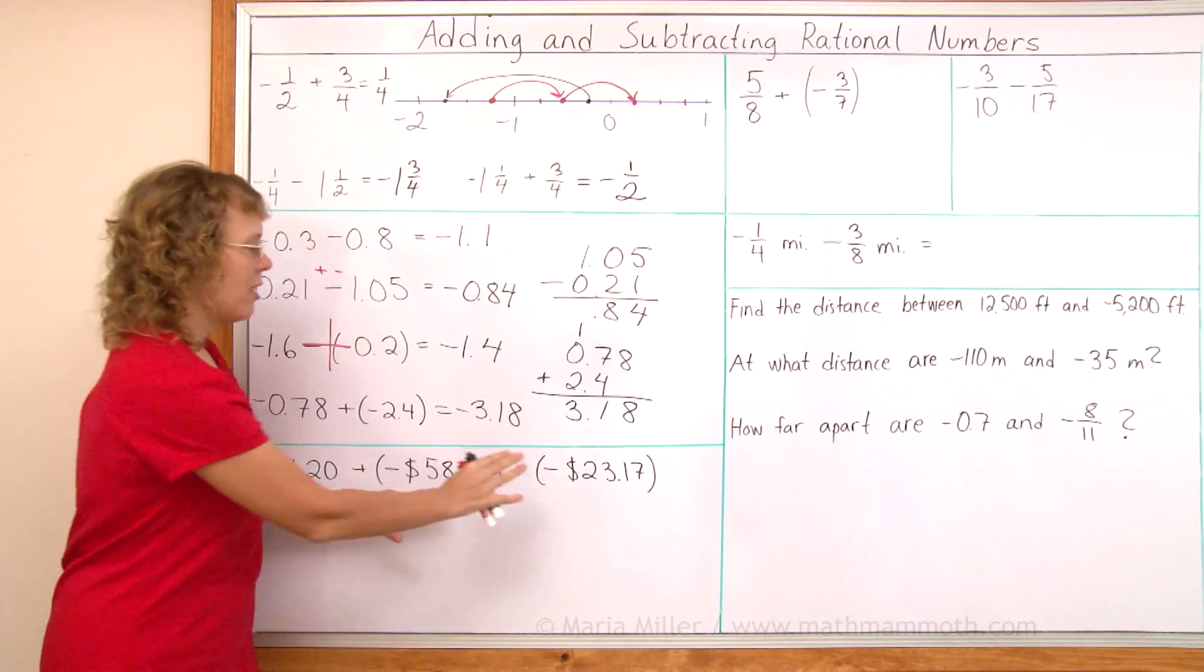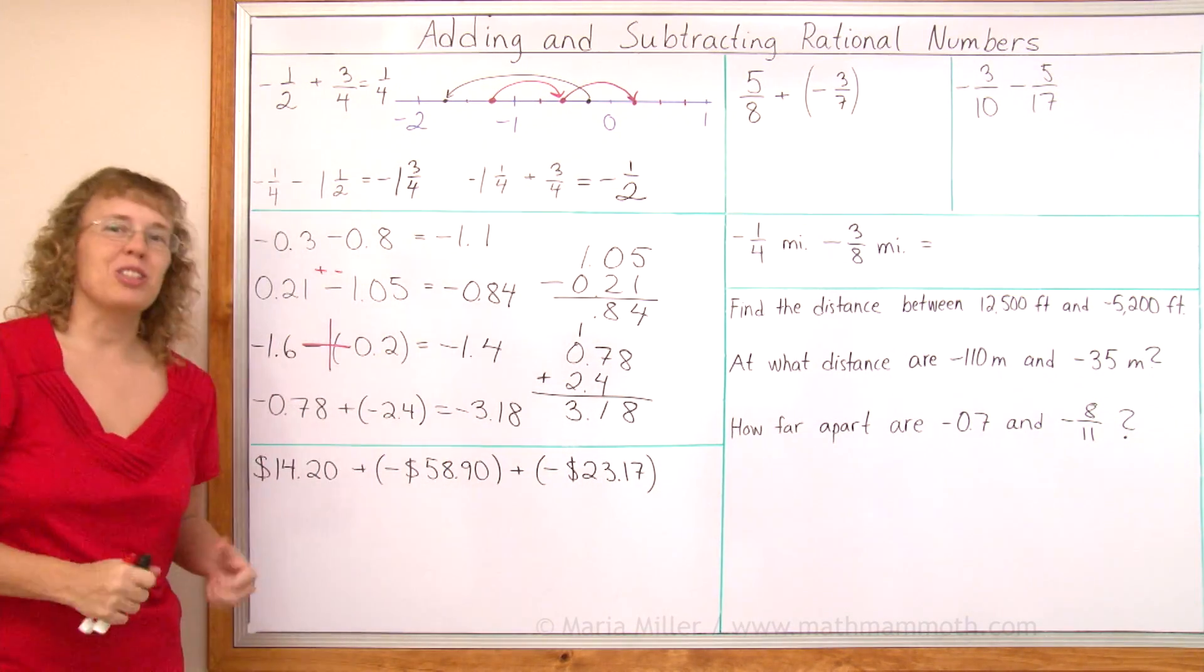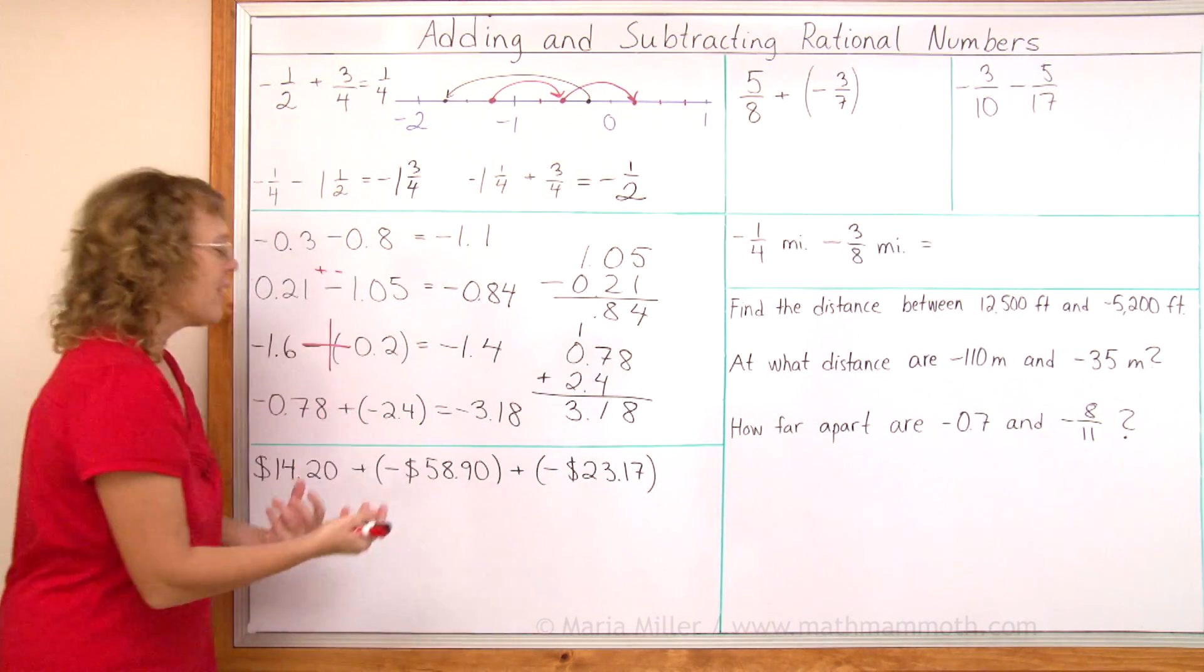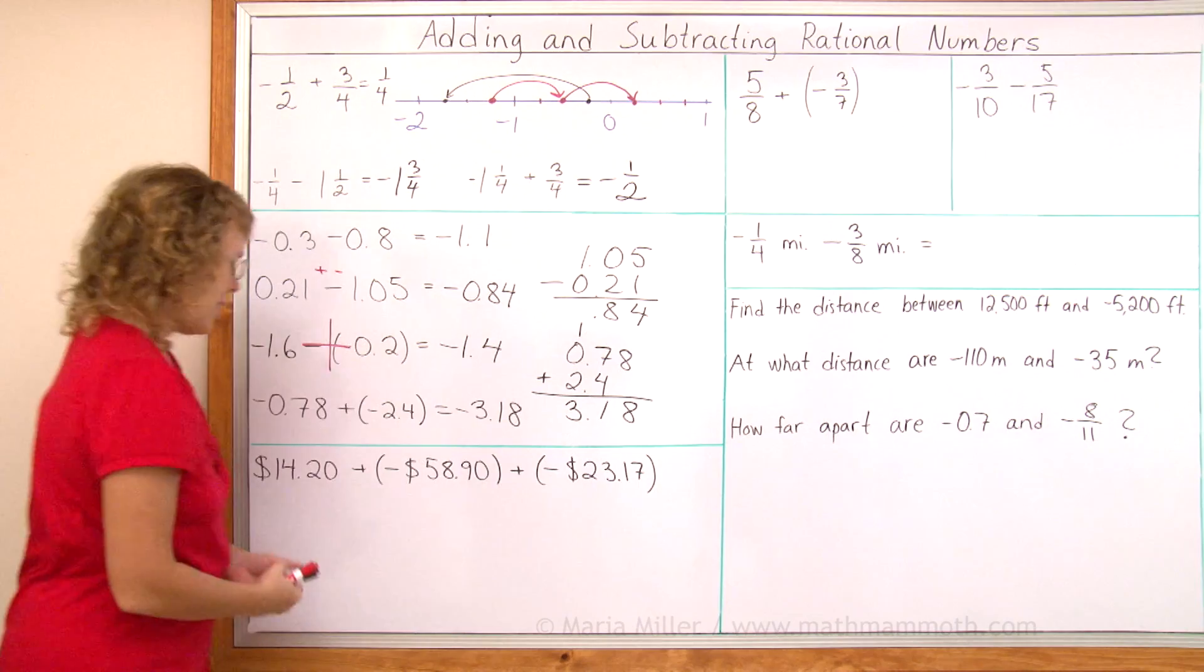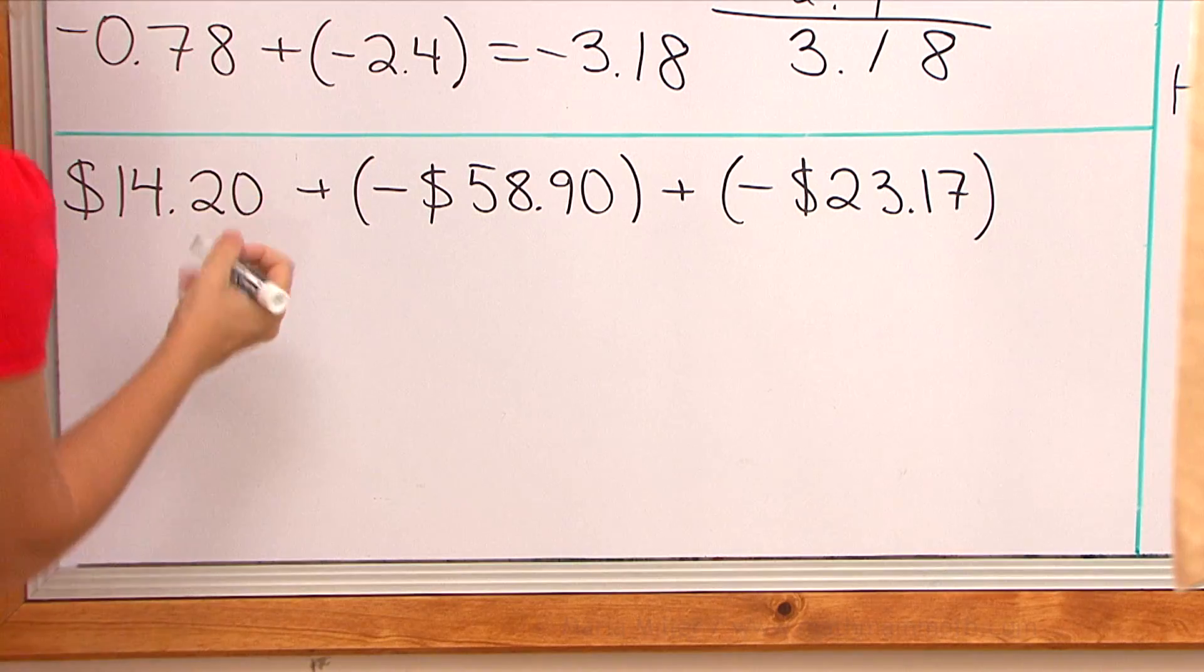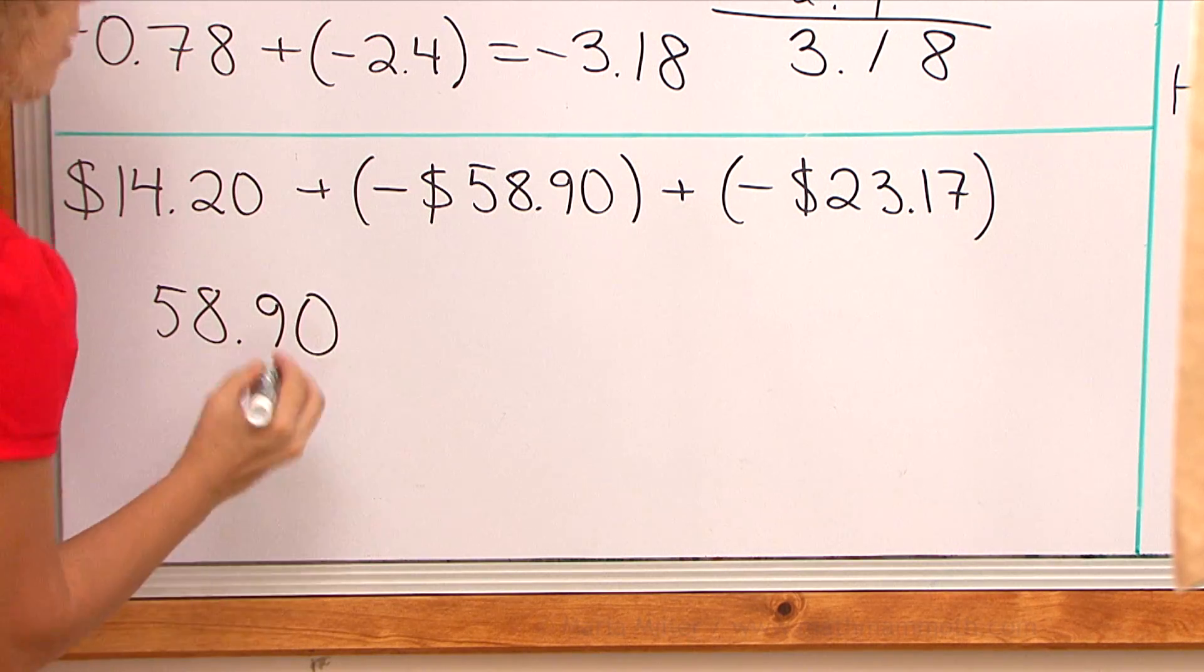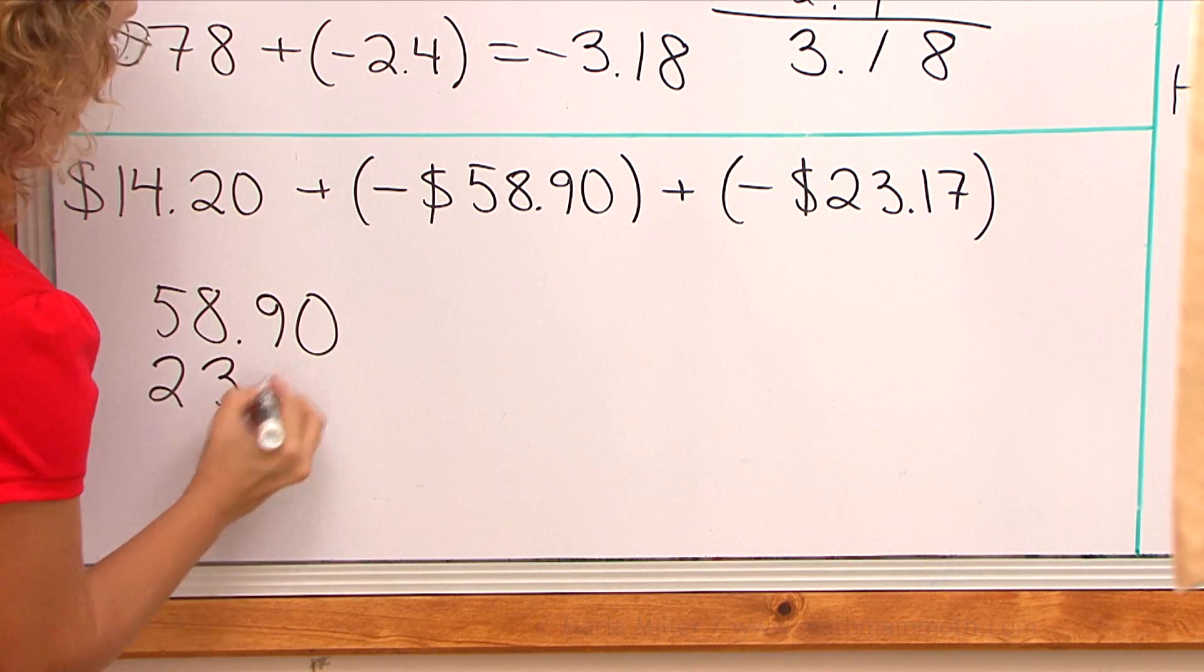And to deal with this kind of addition where there's lots of negatives or more than one, we first figure out the total for the negatives. Which means I add these two numbers, I take the absolute values and add to get the total for the negatives. We have $58.90 and then $23.17.